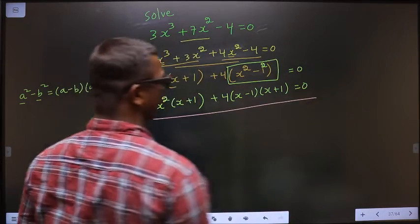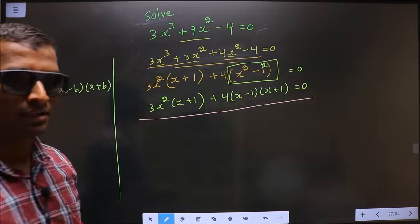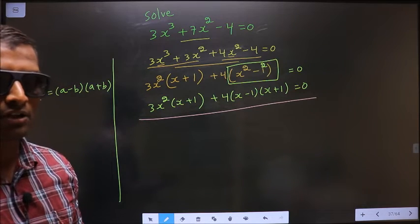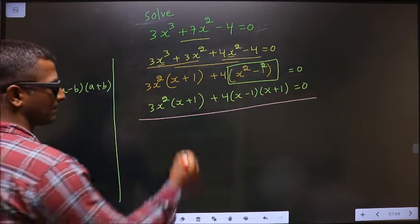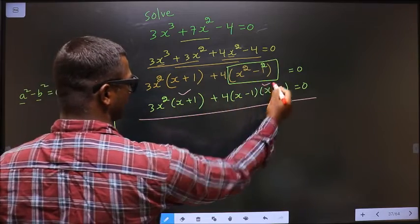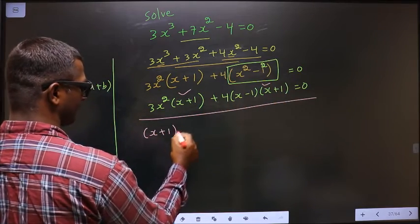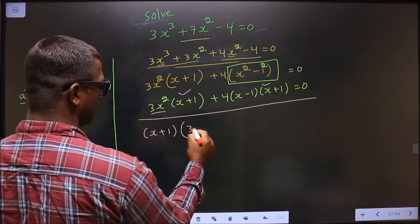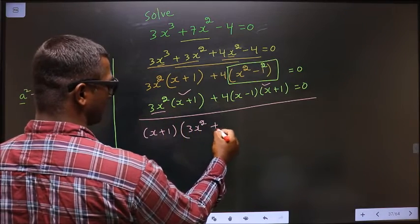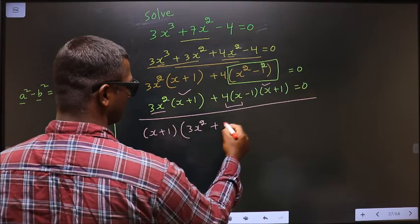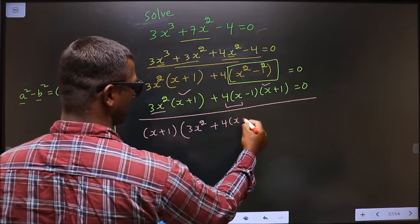Now, from this entire equation, what can be taken out common is x + 1. So here I get 3x² and here I get these two: 4 times x - 1.